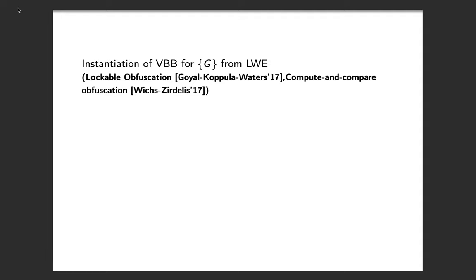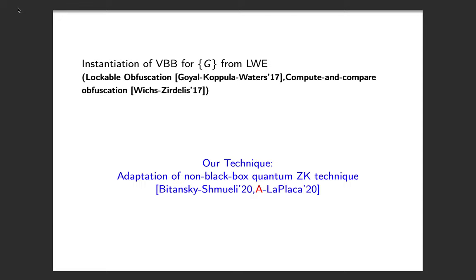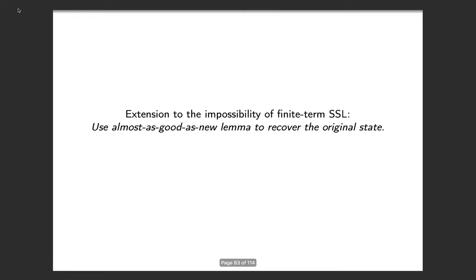We used a VBB obfuscation scheme in our impossibility result. Since the class of circuits being obfuscated is very special, we can instantiate it using lockable obfuscation, also known as compute-and-compare obfuscation. This combination of lockable obfuscation and quantum FHE was also developed in the context of non-black-box quantum zero-knowledge. The impossibility of copy protection can be extended to finite-term SSL using Aaronson's 'almost as good' lemma.